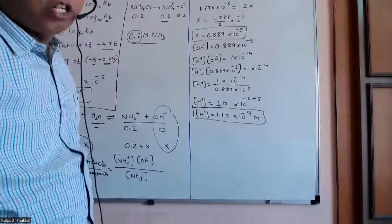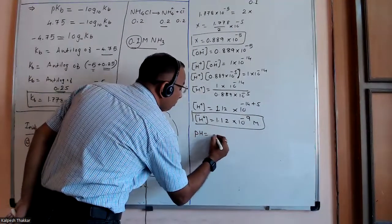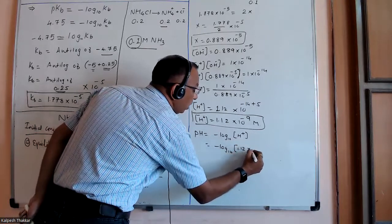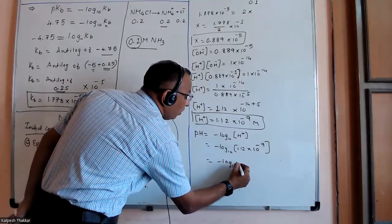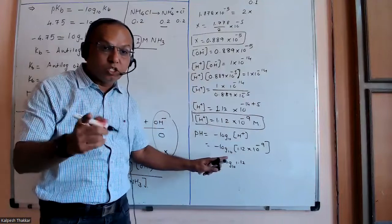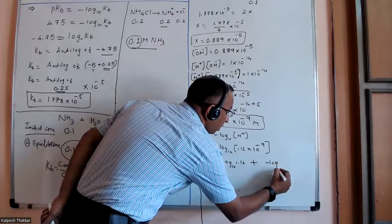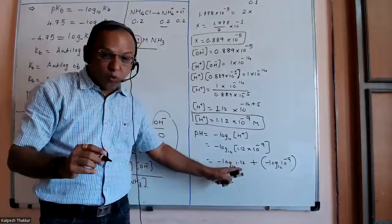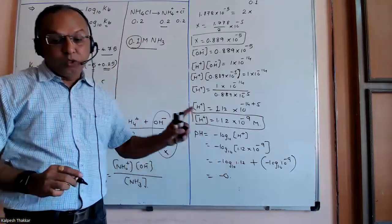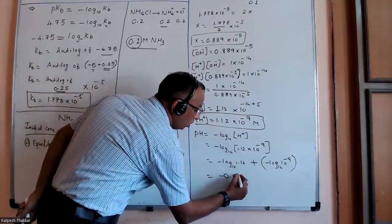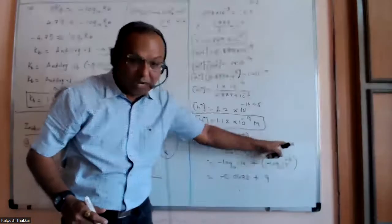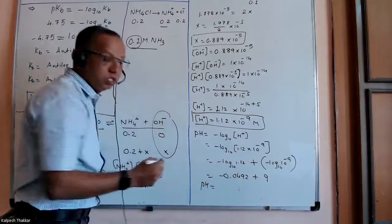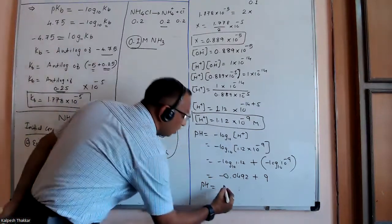The final step is to find pH. pH equals minus log of [H⁺], which is minus log of 1.12 × 10⁻⁹. In log, multiplication converts to addition: minus log 1.12 minus log 10⁻⁹. Log of 1.12 is found from the log table as 0.0492. Minus log 10⁻⁹ gives plus 9. So pH equals 9 minus 0.0492, which equals 8.95.